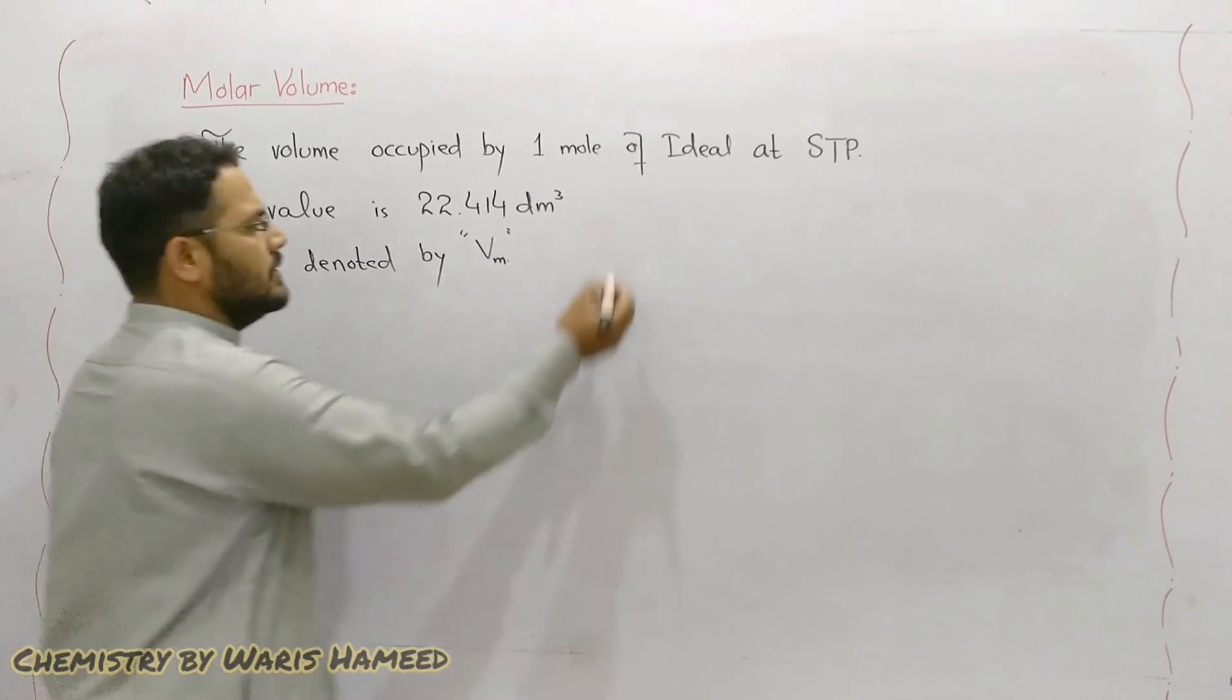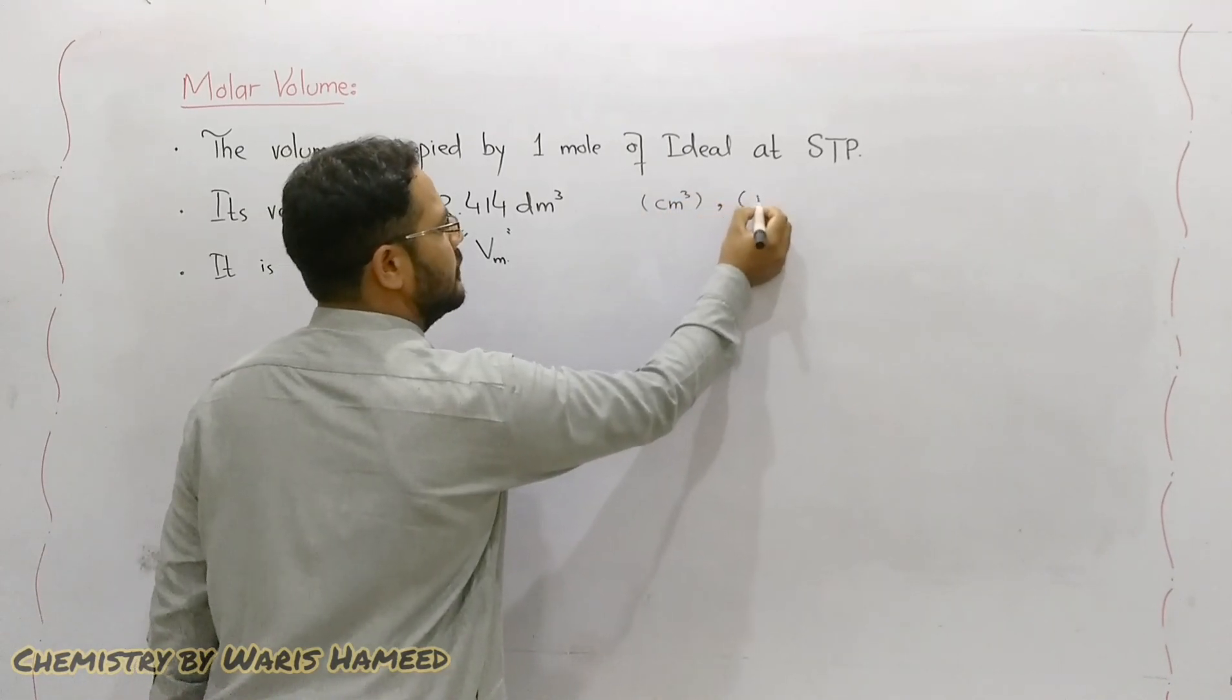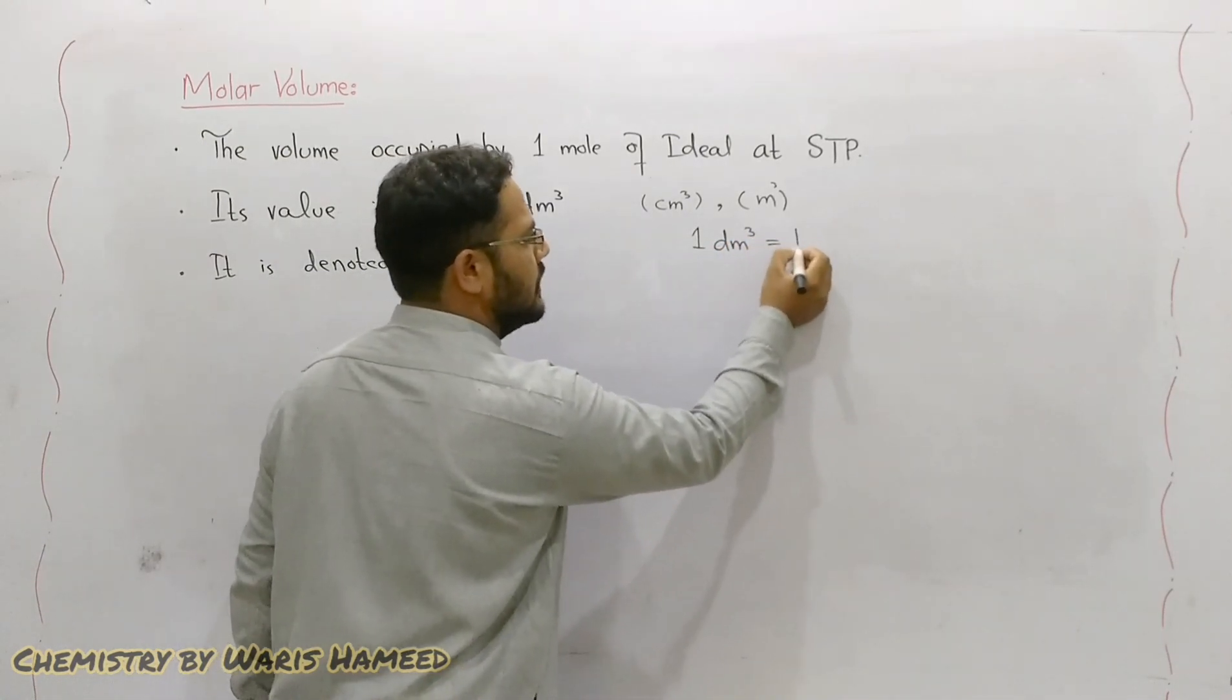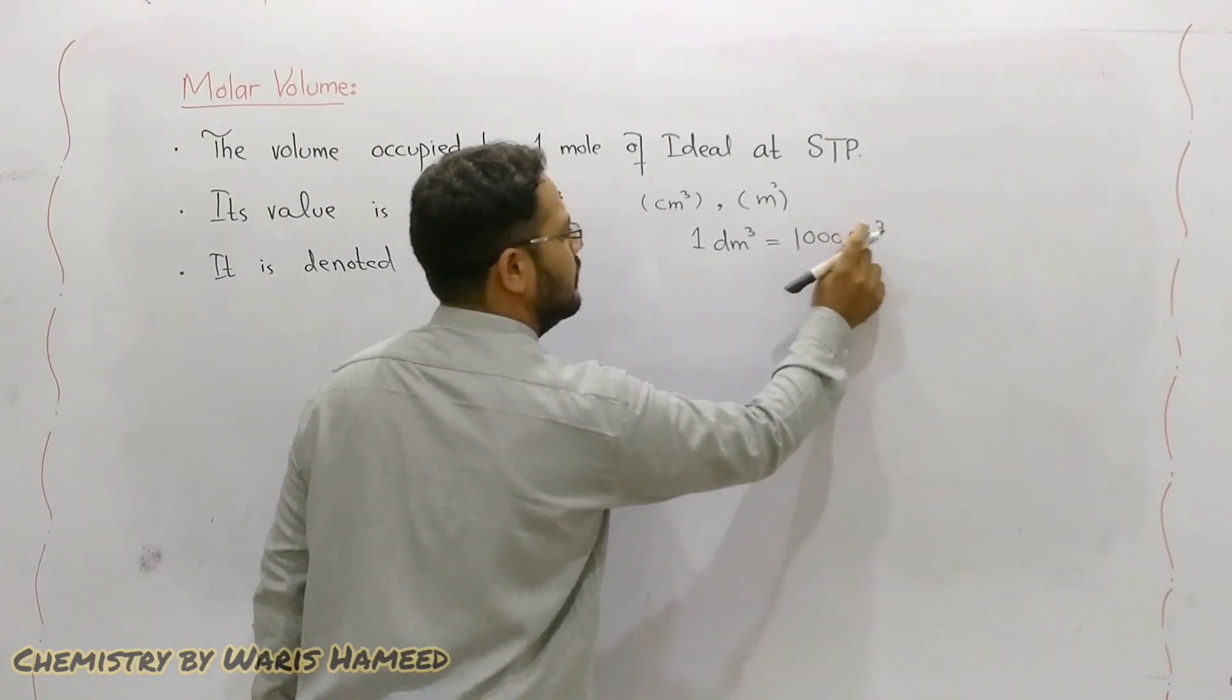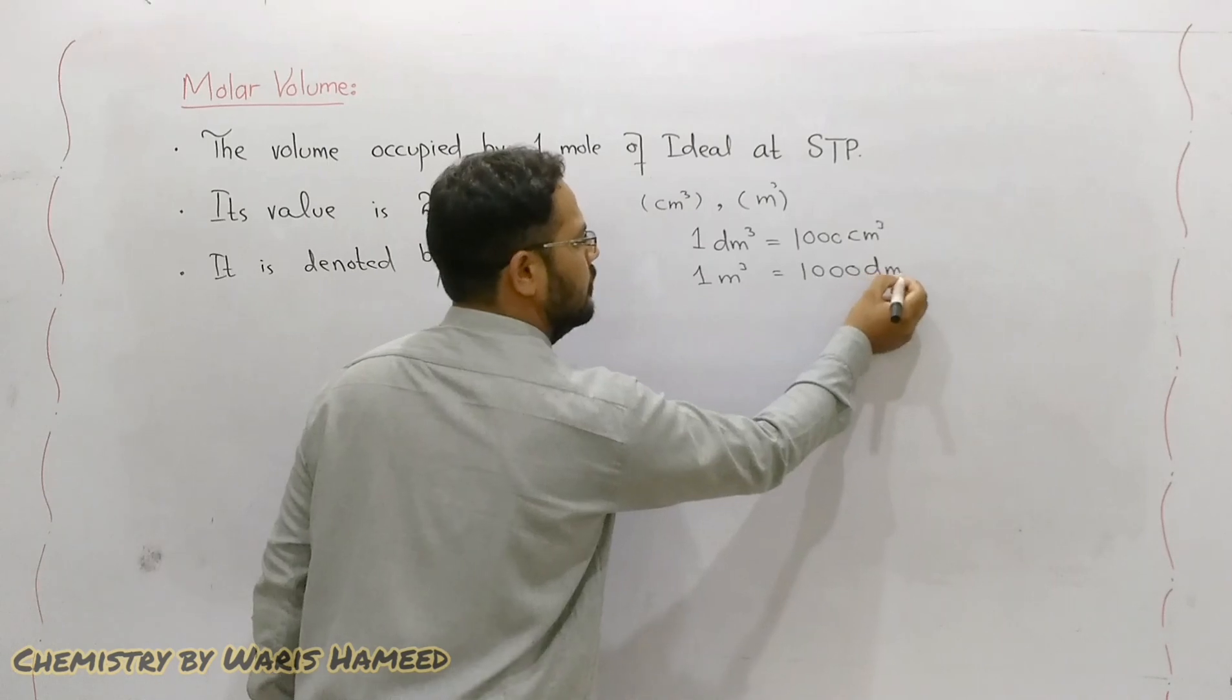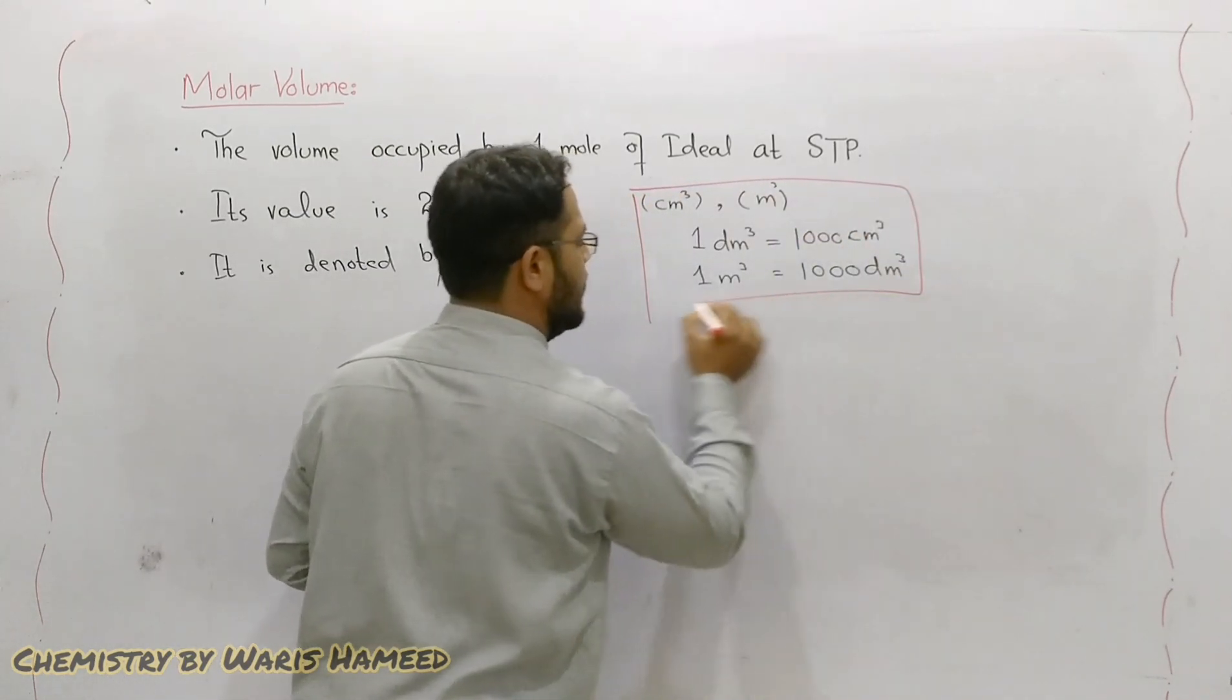Other units are cm³ and m³. One dm³ is equal to thousand cm³ and one m³ is equal to thousand dm³. I have written these; if you need in numericals these values you can use them.